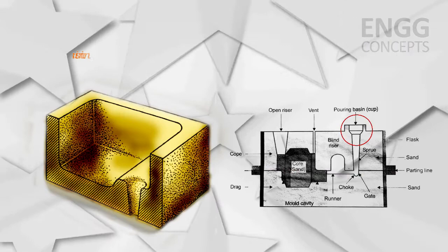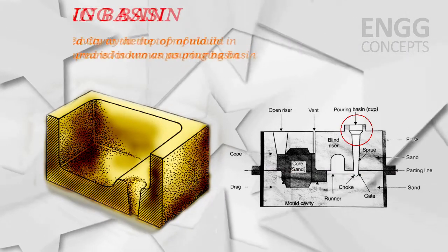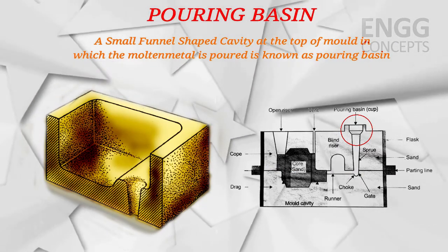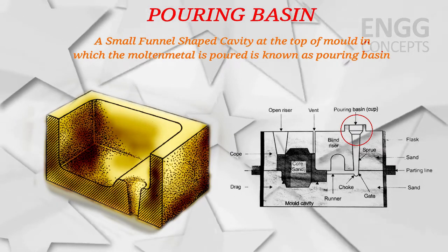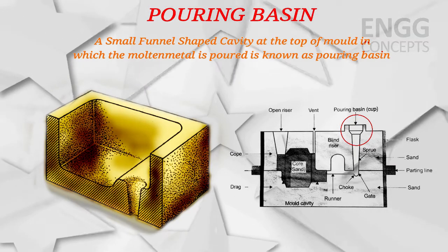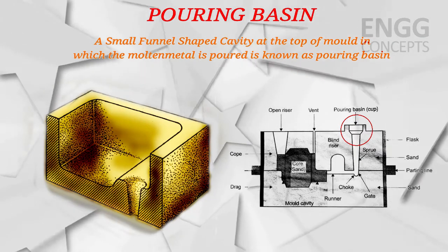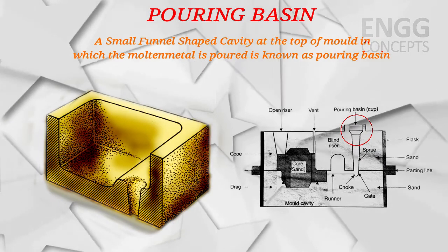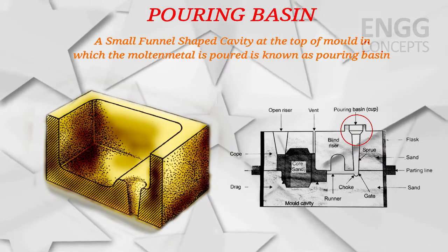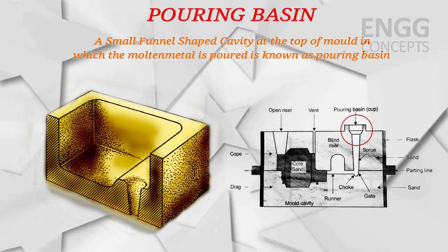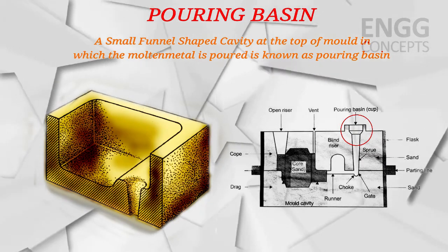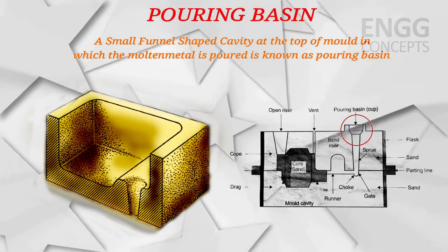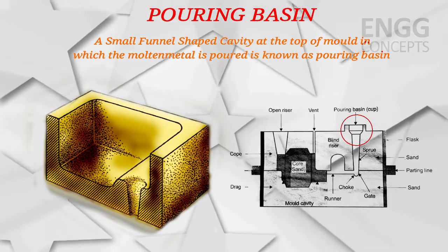A small funnel-shaped cavity at the top of the mold into which the molten metal is poured is known as the pouring basin. When the molten metal is poured into the pouring basin, it will filter impurities such as oxides, slag, and dross.